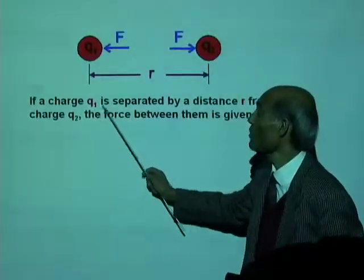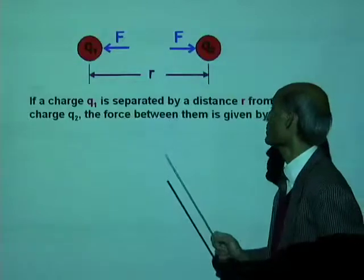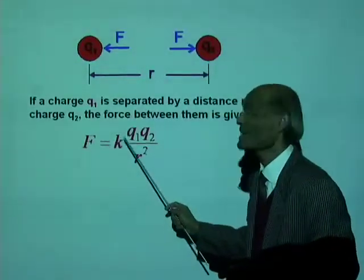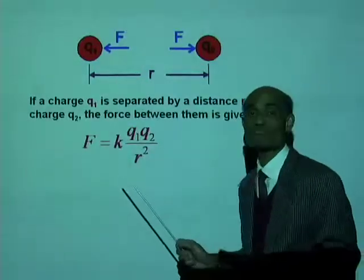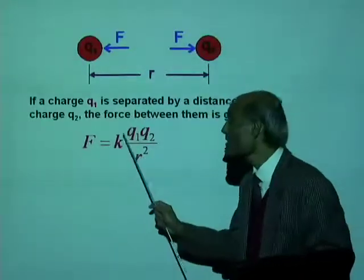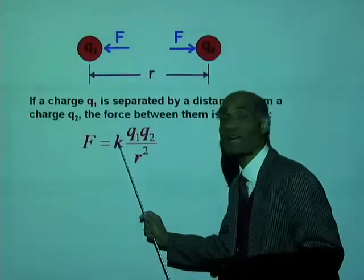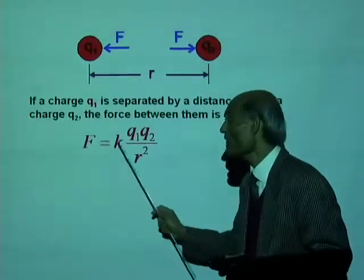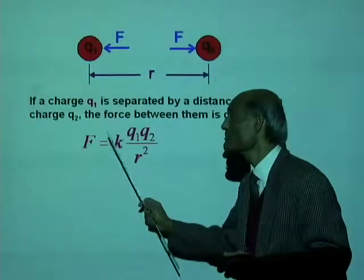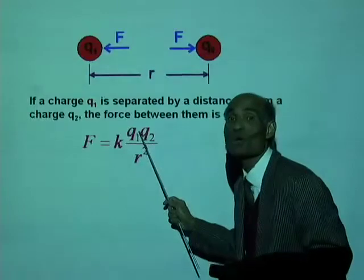If Q1 and Q2 are the two charges separated by distance R, Coulomb's Law gives us a quantitative measure of this force. We can write it as F equal to a constant times Q1 times Q2 divided by R squared. So if a charge Q1 is separated by a distance R from a charge Q2, the force between them is F = K Q1 Q2 over R squared. The unit of K will be Newton meter squared per Coulomb squared.